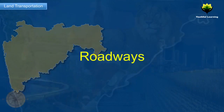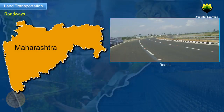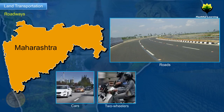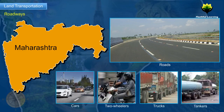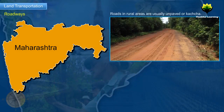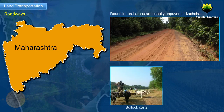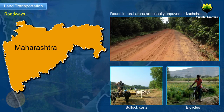Roadways. Roads are ideal for covering short distances using cars, two-wheelers, trucks and tankers. Roads in rural areas are usually unpaved or kaccha, where people travel to places by using bullock carts, bicycles, etc.